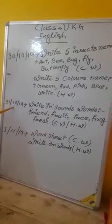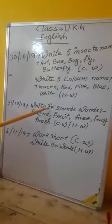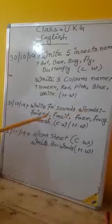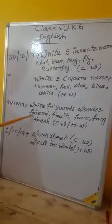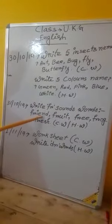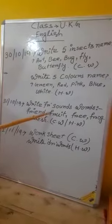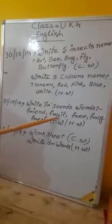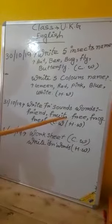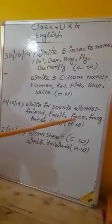31 October 2019. Write the F, R sound words. Like French: F, R, E, N, C, H. Fruit: F, R, U, I, T - Fruit. Free: F, R, E, E.